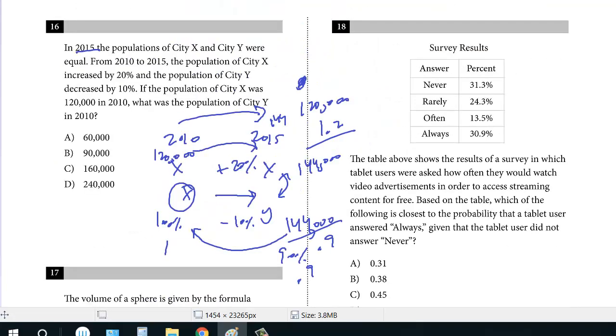Let's take a look at number 18. The table shows the results of a survey in which tablet users were asked how often they would watch video advertisements to access streaming content for free. Based on the table, which is closest to the probability that a tablet user answered 'always' given the tablet user did not answer 'never'? This is a probability, but you want to be careful. We see the word 'given.' We're not considering the whole population.